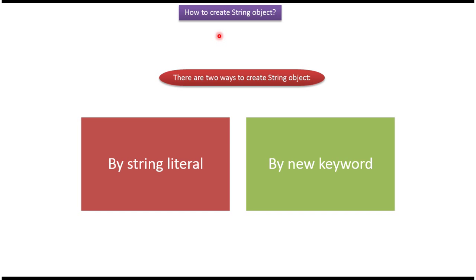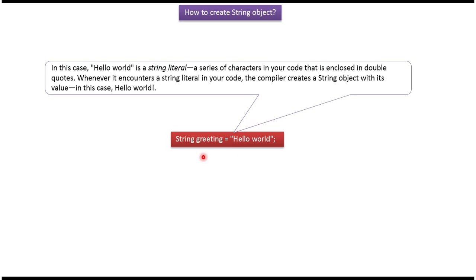In this video tutorial I will cover how to create a string object. There are two ways we can create a string object: the first one is by string literal and the second one is by new keyword. Here I have created a string object using string literal, where the 'hello world' part is the string literal.